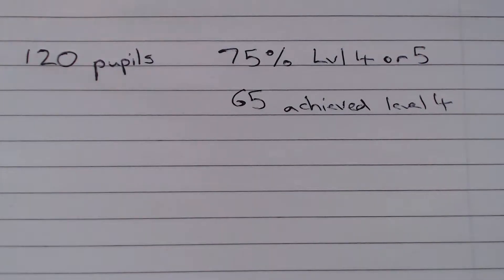In this question we are told that there are 120 pupils and 75% of the pupils achieved a Level 4 or Level 5. We are told that 65 pupils achieved a Level 4. And the question asks us how many pupils achieved a Level 5.